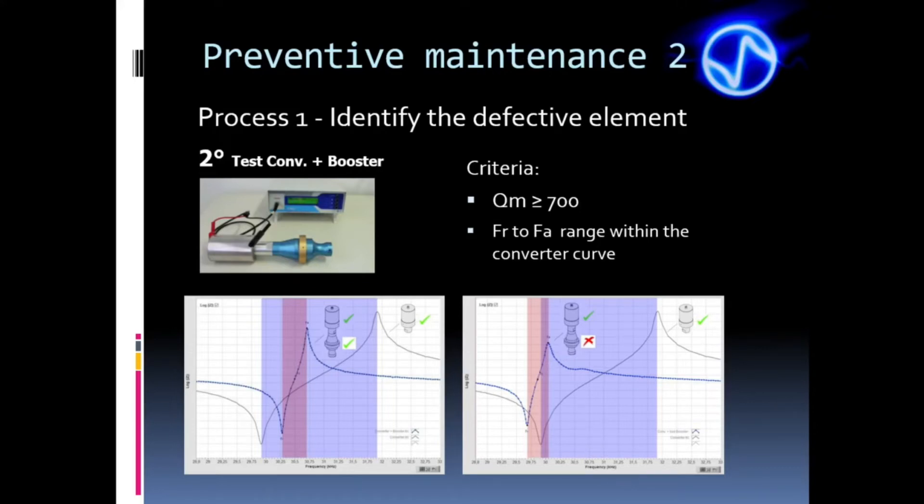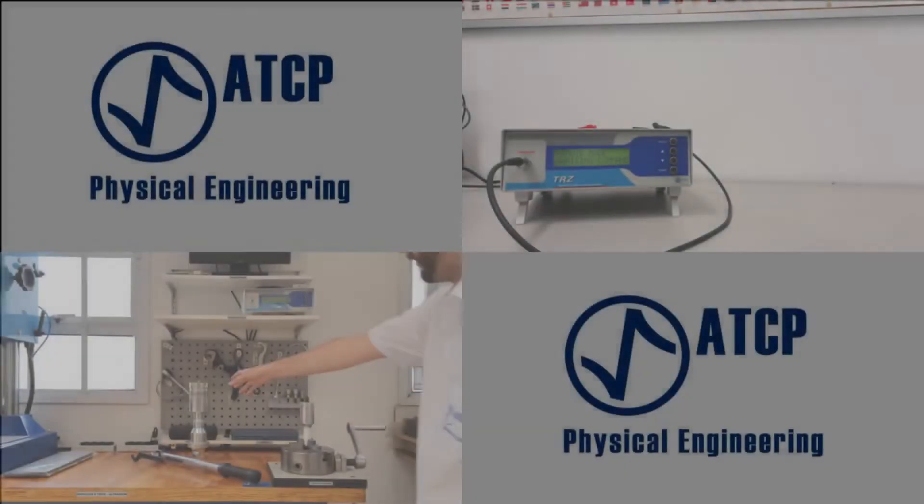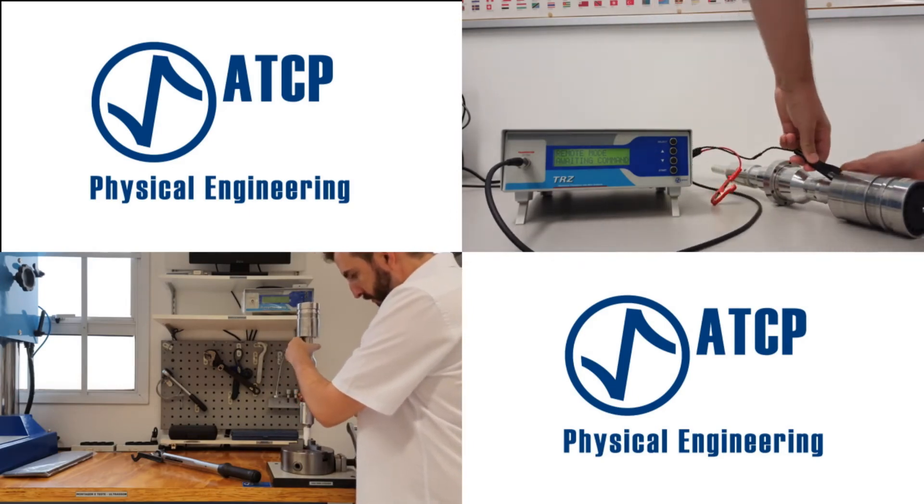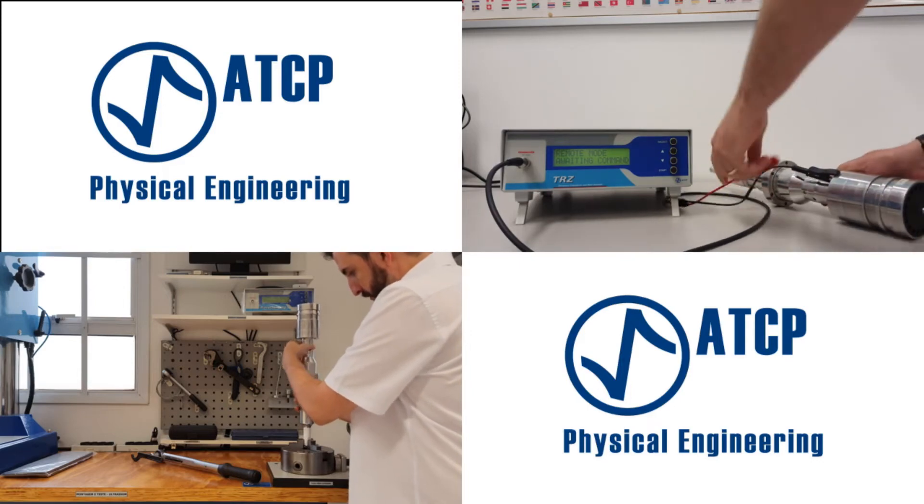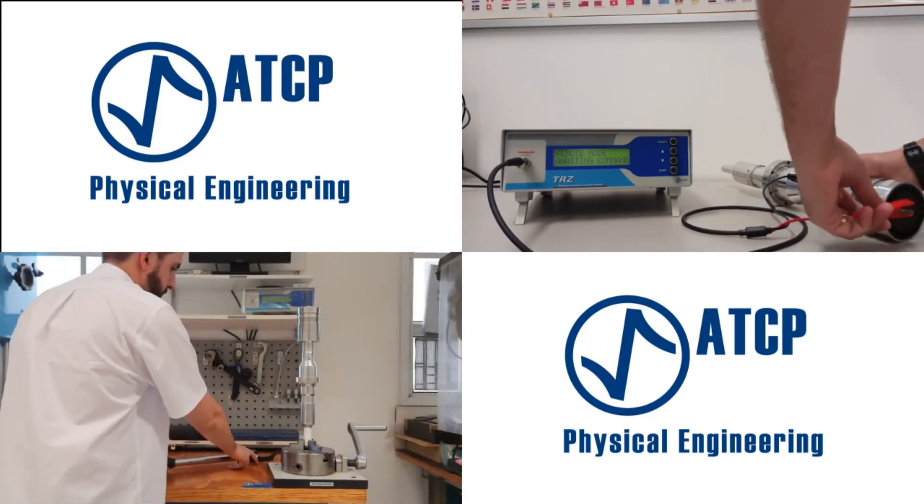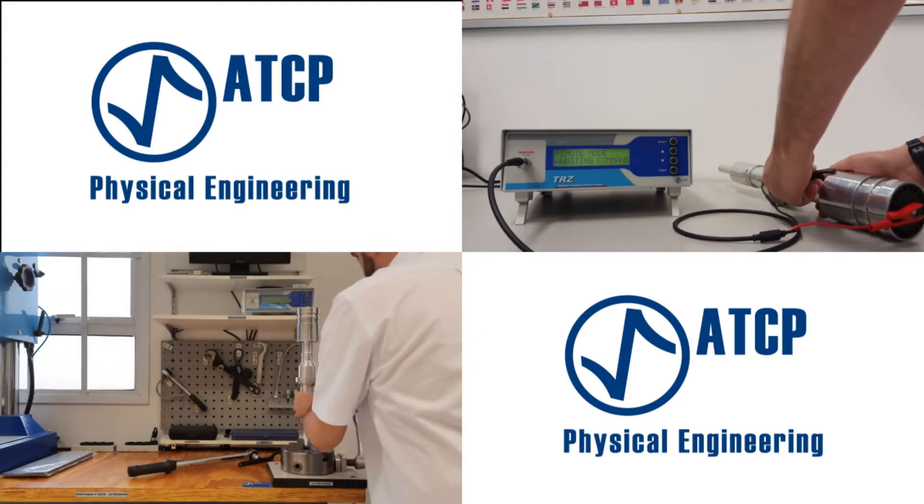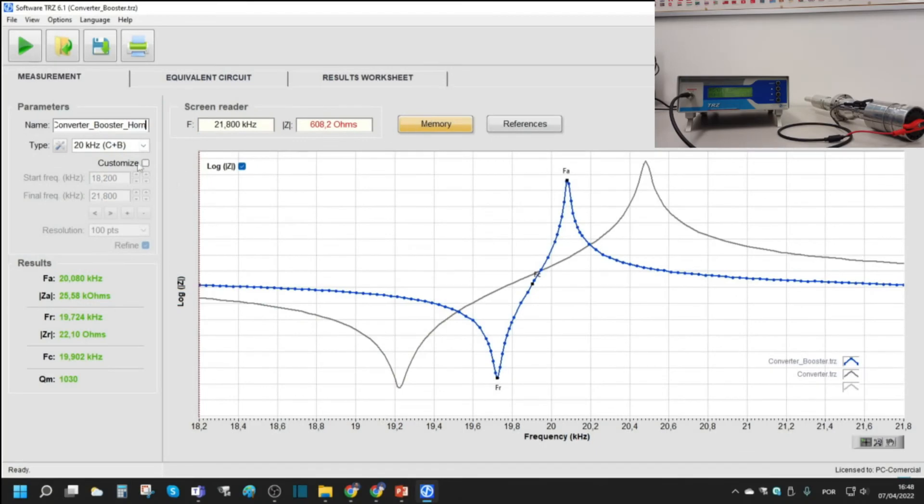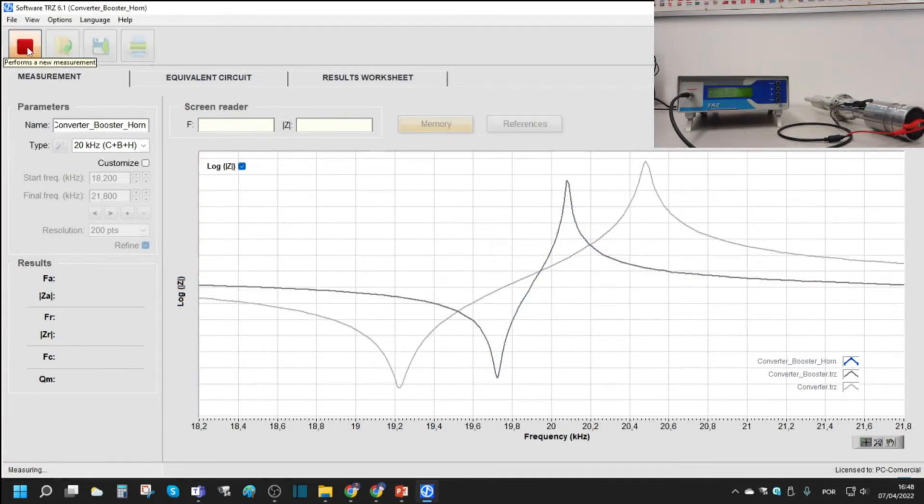It's worth stressing again that even if the converter had failed, we should still test the booster. And even if the booster fails, we still need to test the horn or sonotrode. To test the horn, the procedure is again similar to the converter test. First, assemble the complete stack and connect the converter to the TRZ clips. Remember, the converter and booster must be in good condition to test the horn. Select C plus B plus H in the software. Finally, press play button to perform the measurement.